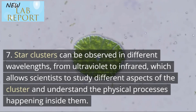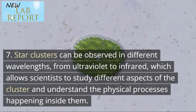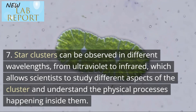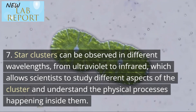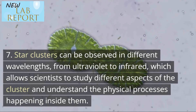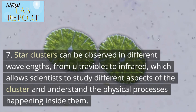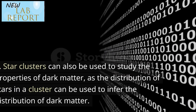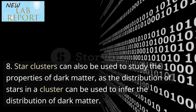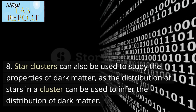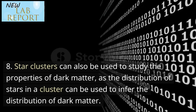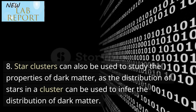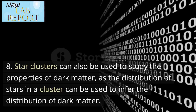Star clusters can be observed in different wavelengths, from ultraviolet to infrared, which allows scientists to study different aspects of the cluster and understand the physical processes happening inside them. Star clusters can also be used to study the properties of dark matter, as the distribution of stars in a cluster can be used to infer the distribution of dark matter.